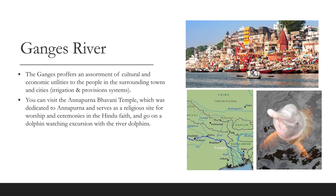The Ganges River offers an assortment of cultural and economic utilities to surrounding towns and cities, including irrigation systems and religious significance. You can visit the Annapurna-Bhavani Temple, dedicated to Annapurna and serving as a site for Hindu worship and ceremonies. You can also go on a dolphin-watching excursion with the river dolphins — a very exciting activity that clients love.